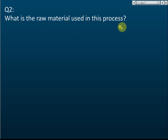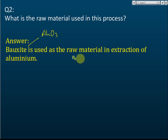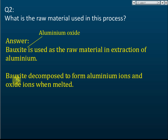The raw material used as the electrolyte is Bauxite. Bauxite is Aluminium Oxide, so we use Aluminium Oxide as the raw material in extracting Aluminium.